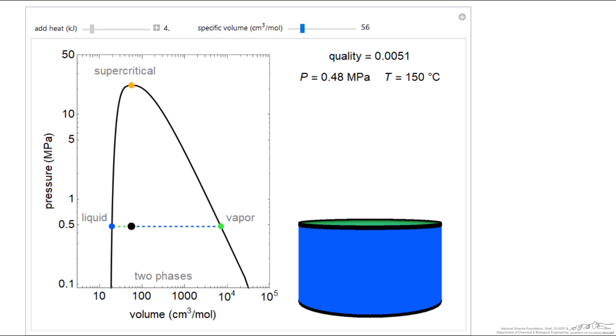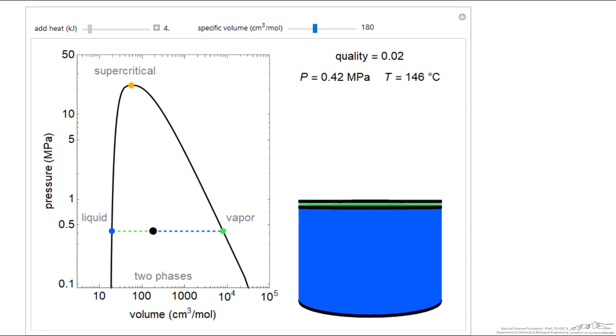This simulation represents the behavior if we have a fixed volume container. We start out with a liquid-vapor mixture. The idea is we can change the specific volume, and then the volume of liquid and the volume of vapor is represented on the right.